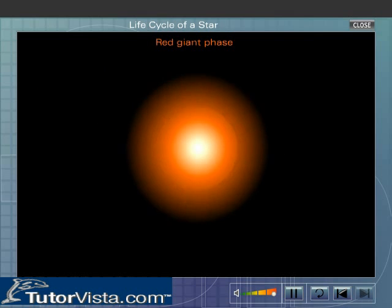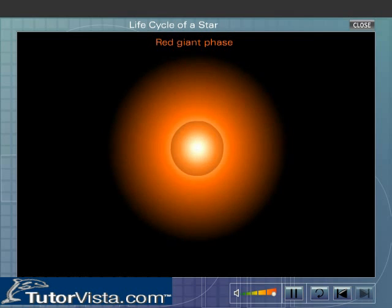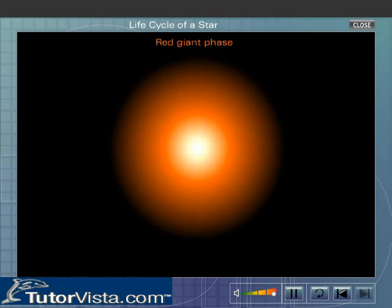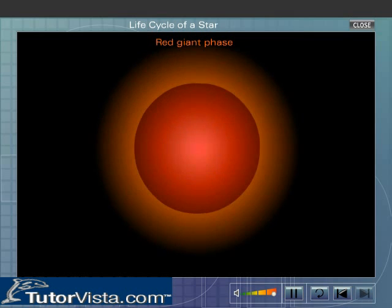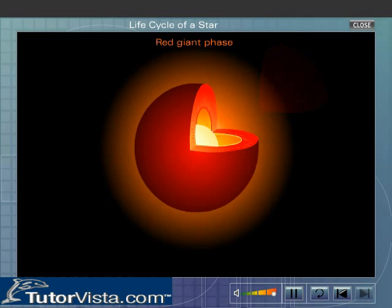Therefore, the outer shell of the star begins to expand. As a result, its surface area increases and the intensity of radiated energy decreases. At this stage, the color of the star changes to red and the star is said to be in the red giant phase.